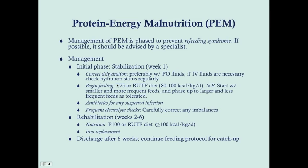The initial phase during week one is to correct dehydration — preferably with PO fluids, but IV fluids if they're vomiting. Check hydration status regularly, as we're concerned about electrolytes. You'll also begin feeding with F75 or the ready-to-use food diet, giving 80 to 100 kilocalories per kilogram per day. Start with smaller and more frequent feeds, then phase up to larger and less frequent feeds as tolerated. Give antibiotics for any suspected infection, and do frequent electrolyte checks, carefully correcting any imbalances.